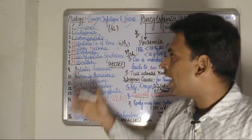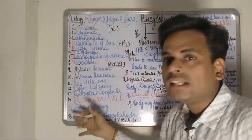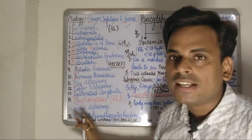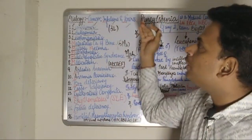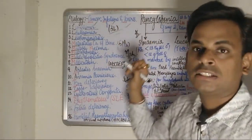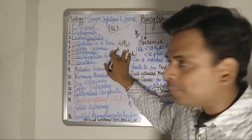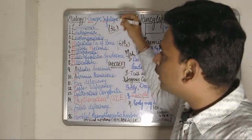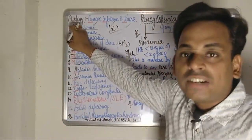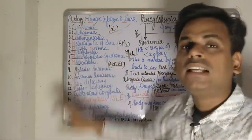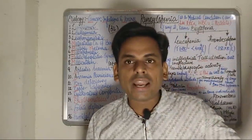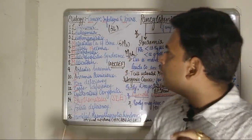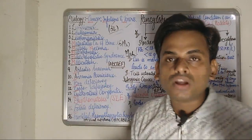I have made a mnemonic to easily remember all the etiological factors of pancytopenia. The mnemonic consists of the Three L's, the Five M's, and the alphabets A through F. The Three L's refer to: first, Lymphoma; second, Leukemias; and third, Leishmaniasis.